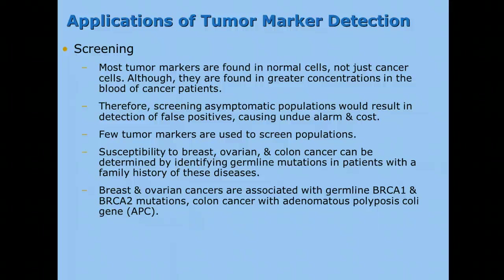The applications of these tumor markers — they're usually found in most normal cells, not just cancer cells, although when somebody has cancer they're found in greater concentration. An example would be prostate-specific antigen. All men have some PSA in their bloodstream, but when we start to see very large quantities, it could mean cancerous tissue is growing in the prostate, and we can use that to screen and detect cancer in men. Screening asymptomatic people would result in detection of false positives, causing undue alarm and cost.